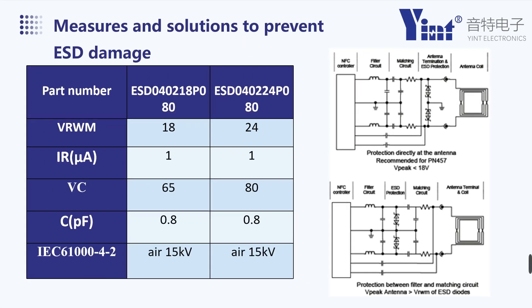NFC is a short-range high-frequency radio technology that operates at a frequency of 13.56 MHz within a distance of 20 cm. Usually in NFC design, the NFC antenna is connected to the NFC control IC through a small contact, and these contacts are easily damaged by ESD, causing the control IC to fail. It is strongly recommended to use Yint's solution. Recommended devices are shown in the table. For more information, contact the email or phone number provided.